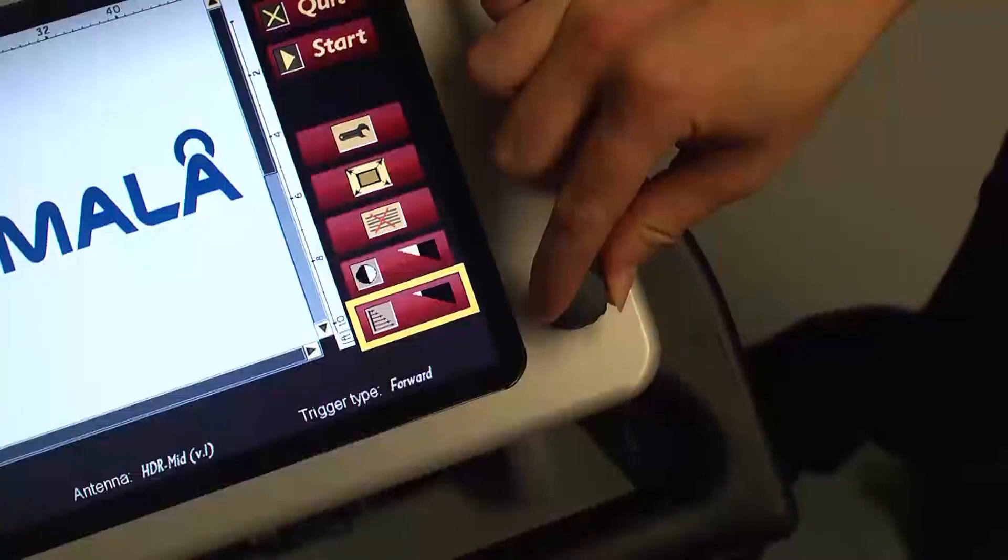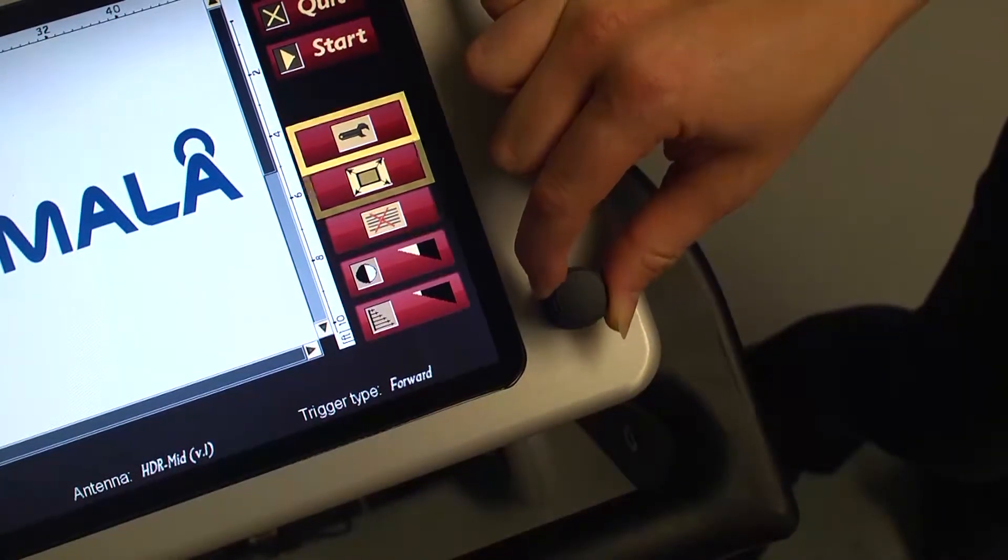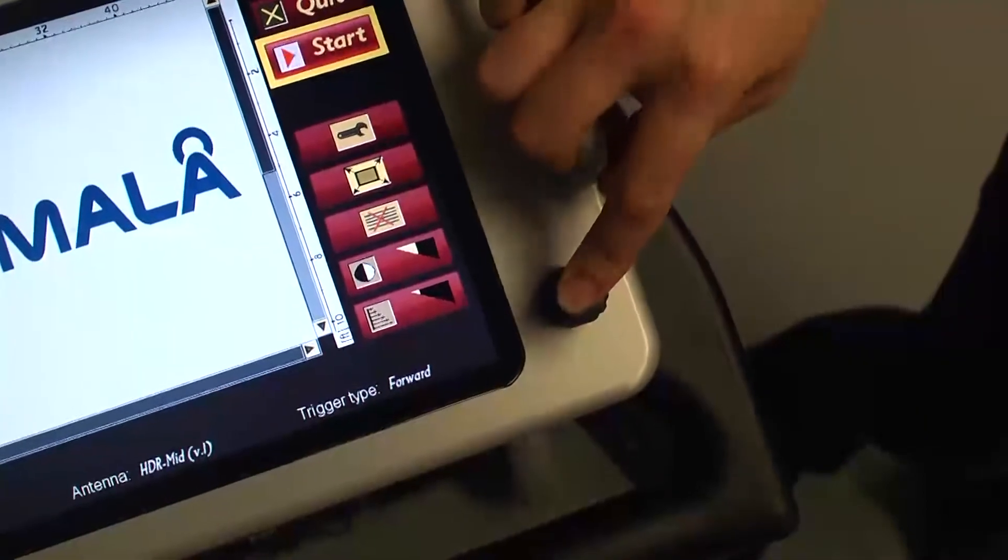On the right side of the display, you'll see high visibility icons that are selected by rotating and pressing the control knob.